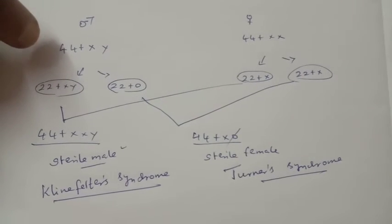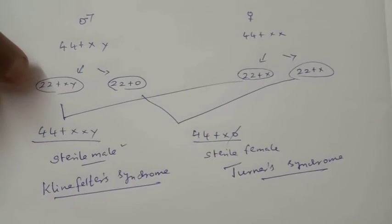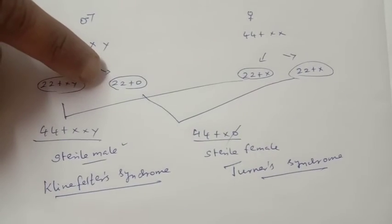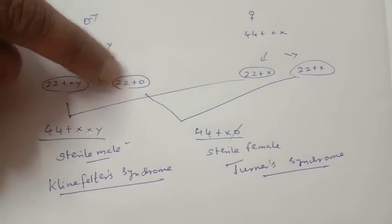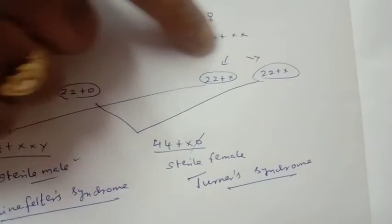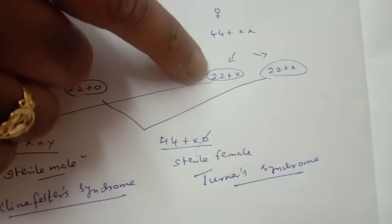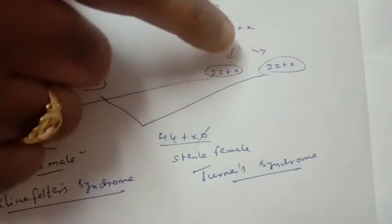This leads to one gamete with 24 chromosomes, another male gamete with 22 chromosomes. Regular meiosis takes place in female. They produce 22 plus X and 22 plus X similar gametes.